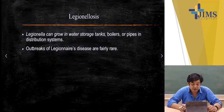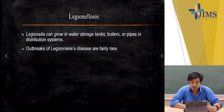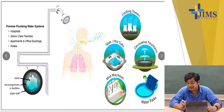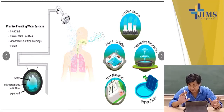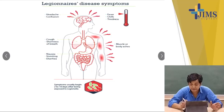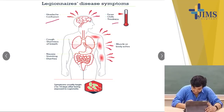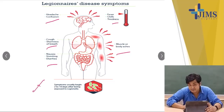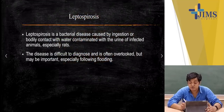Legionellosis can grow in water storage tanks, boilers or pipes in distribution systems; outbreaks of Legionnaire's disease are fairly rare but can infect humans through those contaminated water areas. Symptoms include headache, confusion, fever, chills, tiredness, muscle ache, cough, shortness of breath, nausea, vomiting and diarrhea. Symptoms usually begin 2 to 10 days after being exposed to Legionella.